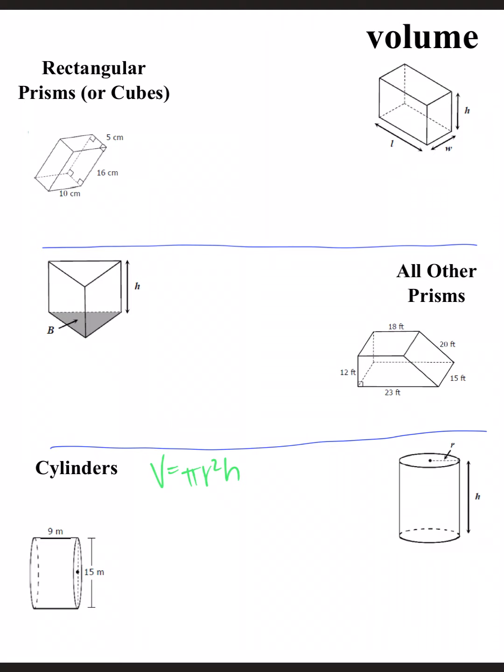Radius squared times height times pi. Here our radius, we're going to cut that diameter in half to get 7.5. Volume is pi times 7.5 squared, and our height is 9. Doing the math, it's 1589.6 meters cubed.